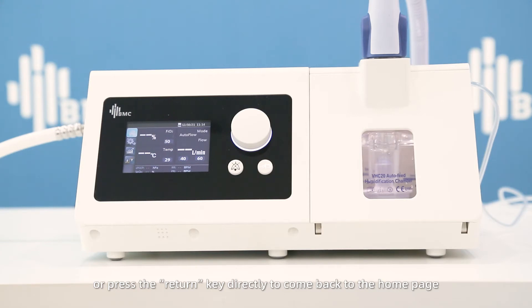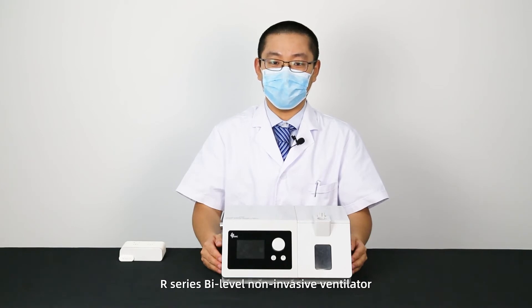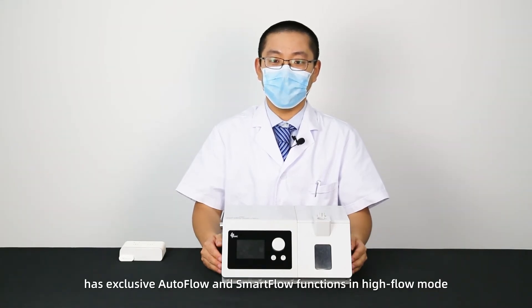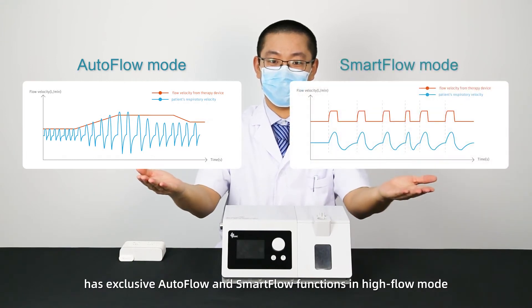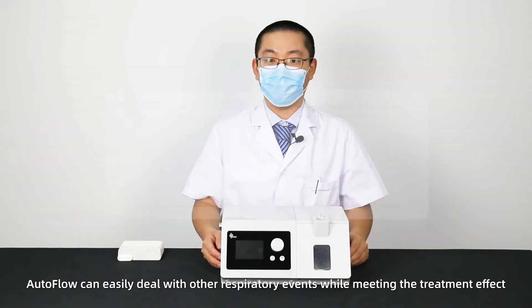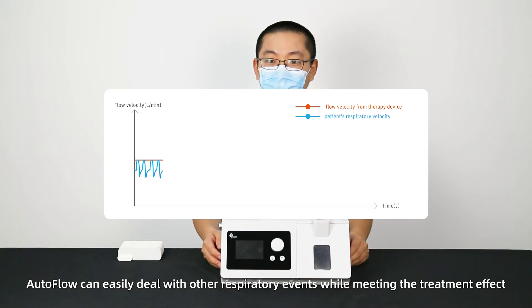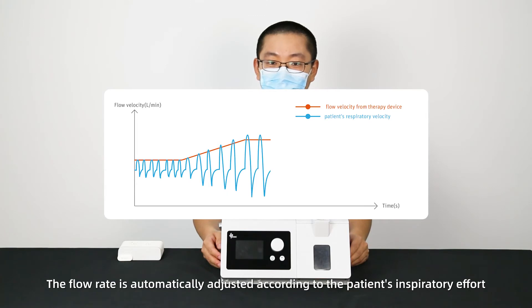R-series bi-level non-invasive ventilator has exclusive auto flow and smart flow functions. In high flow mode, auto flow can easily deal with respiratory events while meeting the treatment effect. The flow rate is automatically adjusted according to the patient's inspiratory effort.